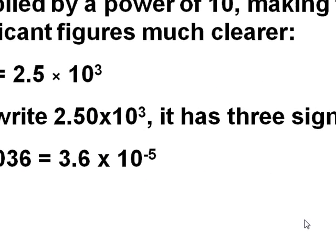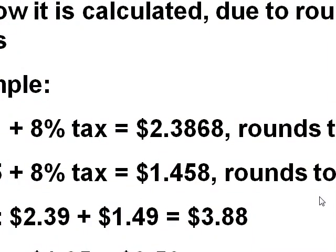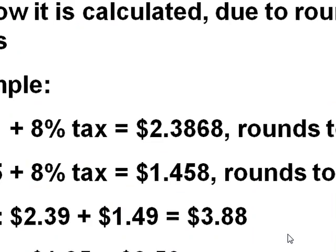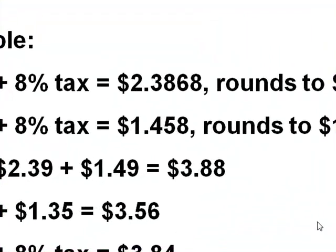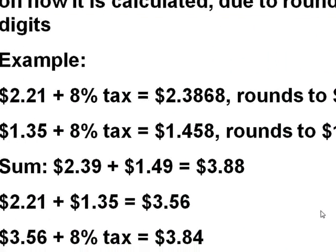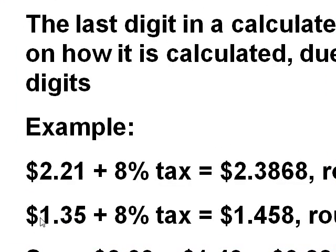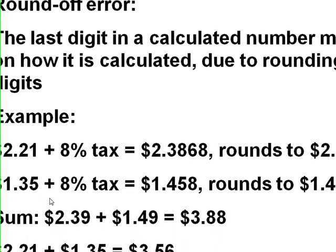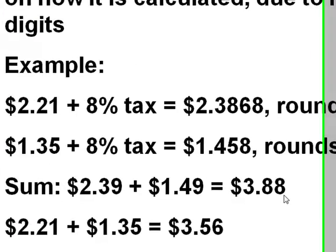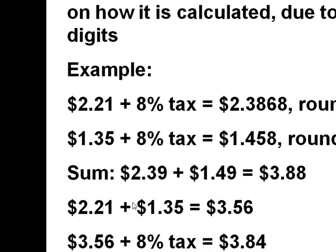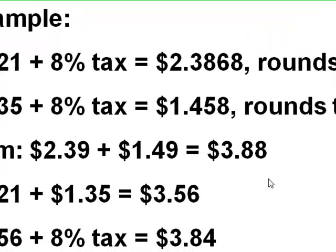The problem is that when we start rounding, there can be some error. So we want to make sure that we don't do any rounding until we get to the end of a problem. So make sure, like in this example, we found tax on 2.21. We found the tax on 1.35, and we rounded it, and then we added it together, and we got a wrong number. So we want to make sure that we do not do any rounding until the very last step of a problem.